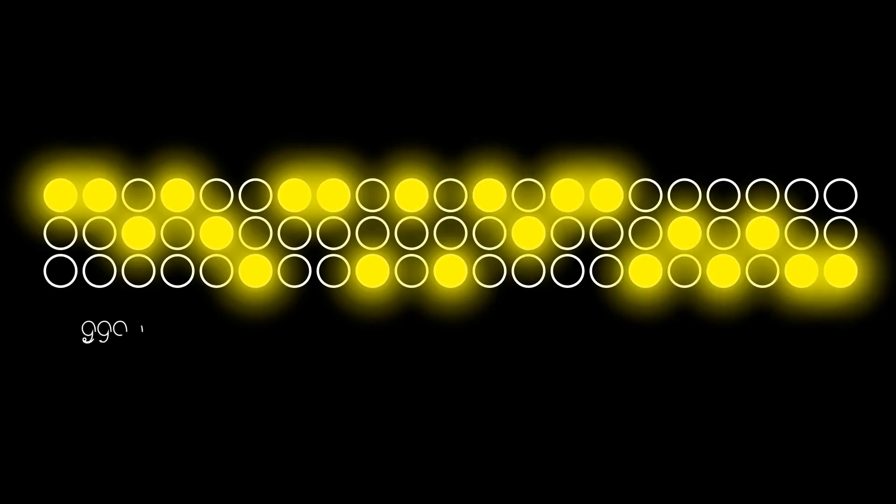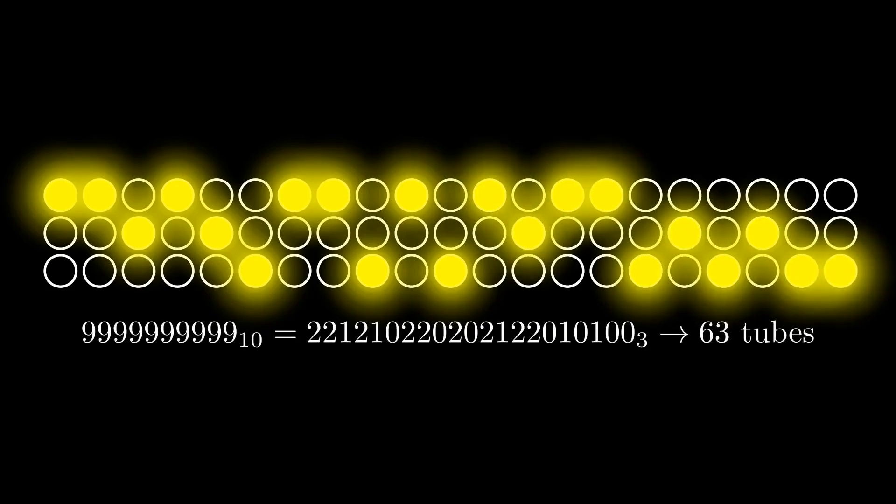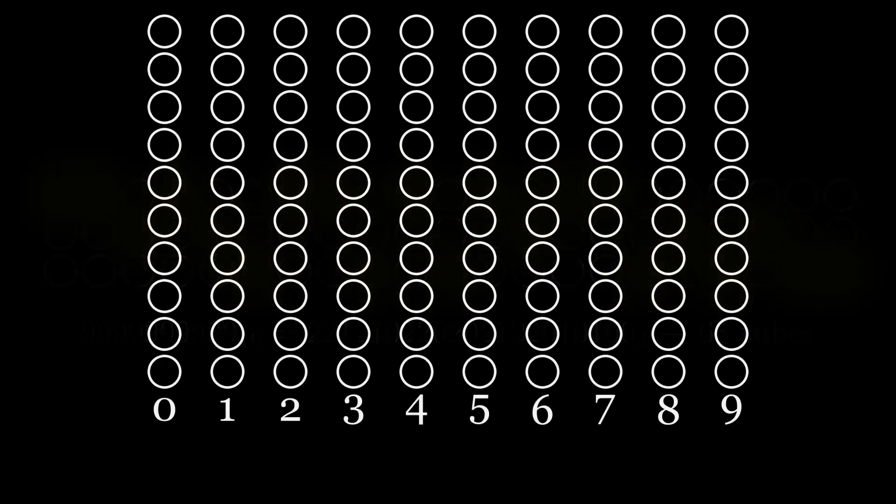The question is, why is this different? We just showed that base 3 is the most efficient for a ring counter system. But that's not the only way to encode numbers. For example,